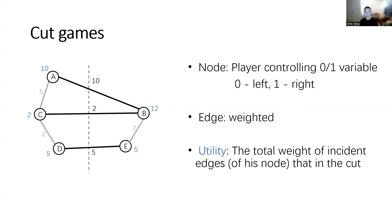To talk about games, we've introduced what strategies players can choose: they can choose to put their own node on the left or right side — that's the binary strategy. For utilities, every player's utility is the total weight of the incident edges of their own node that is in the cut. For example, for node B — player B — he only cares about edges AB, BC, and BE. His utility is 12 because only AB and BC are in the cut.